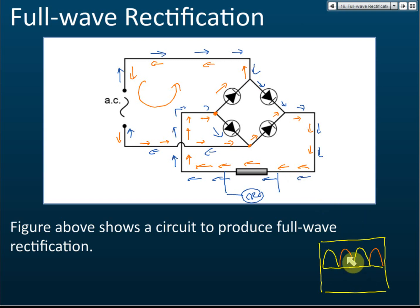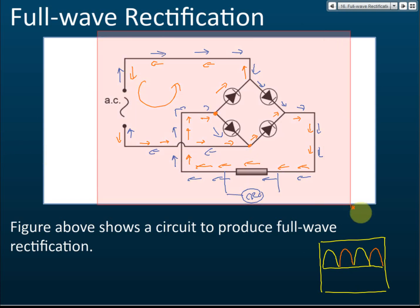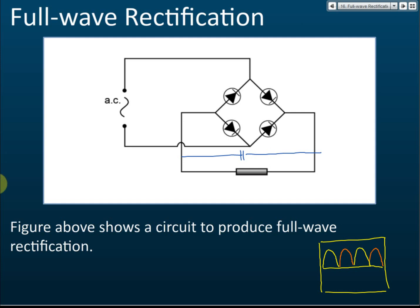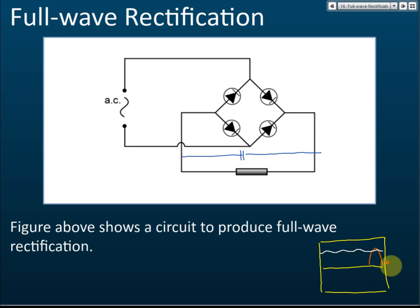The output is still not steady — it increases and decreases. To make it smooth, connect a capacitor in parallel to the resistor, which represents a bulb or any electrical appliance. After connecting the capacitor, you get a smooth, steady current. This is full wave rectification with smoothing.